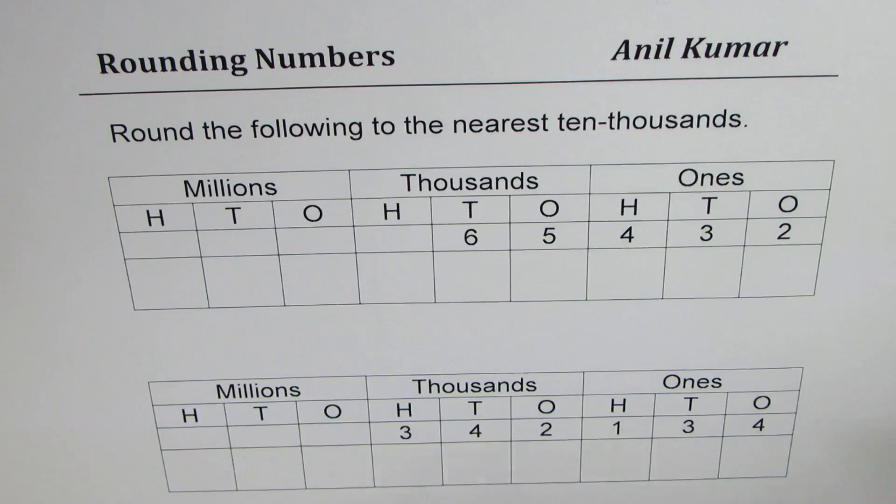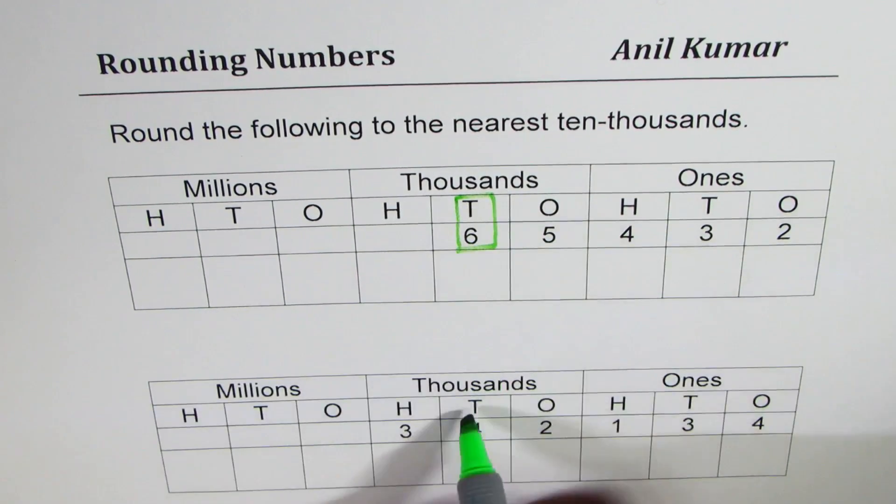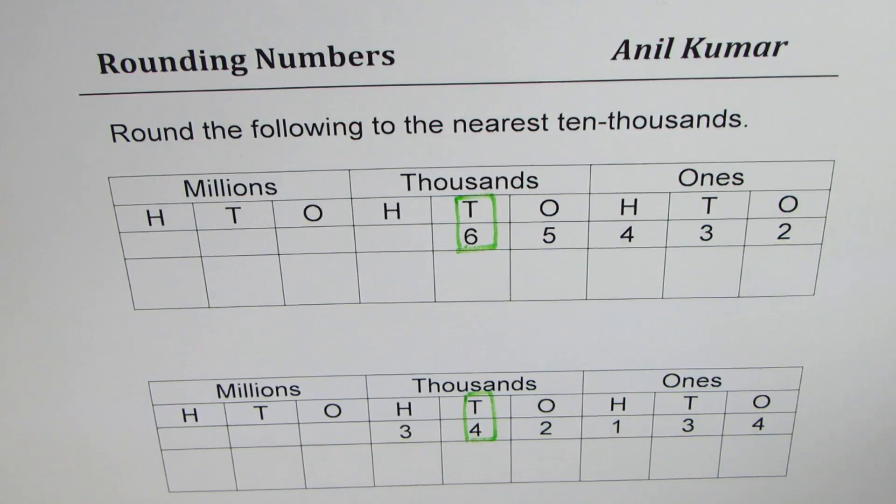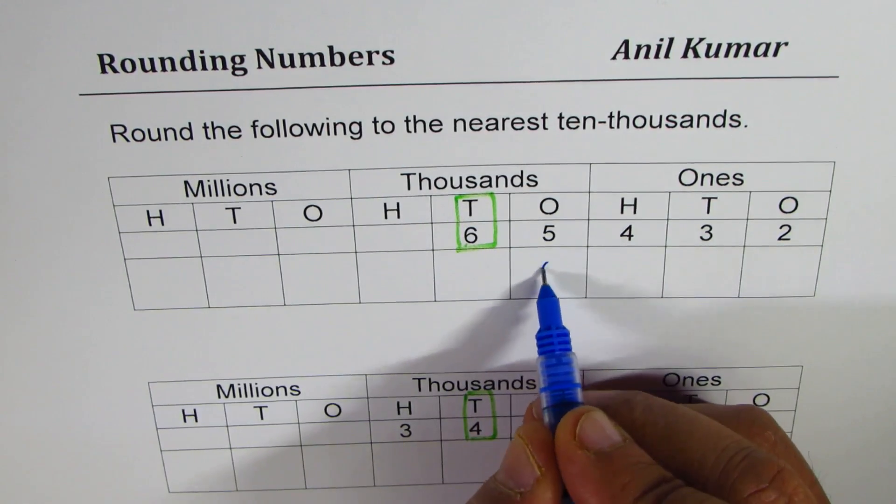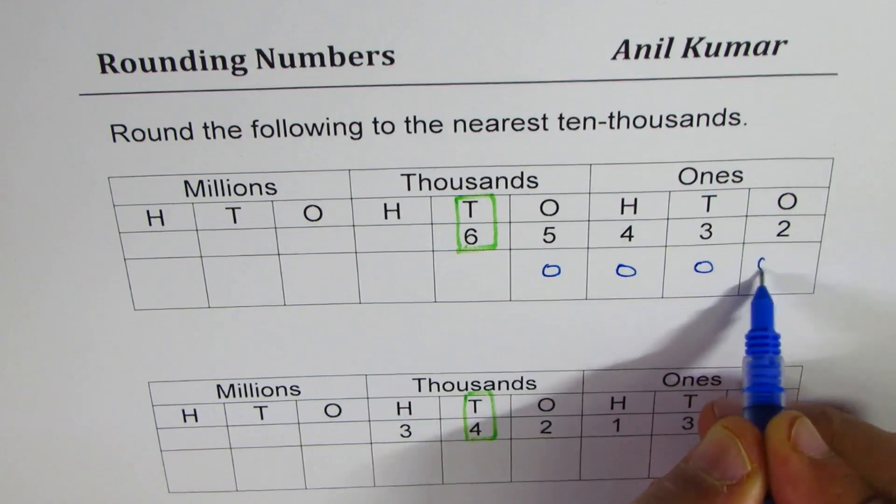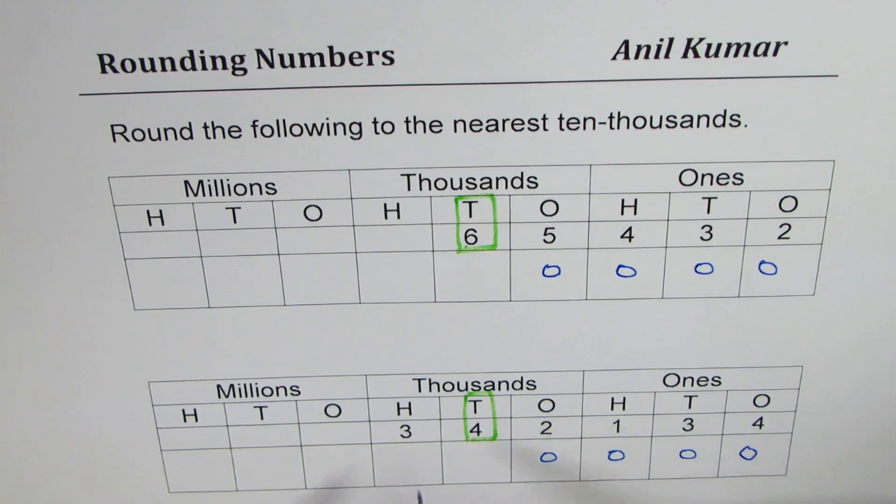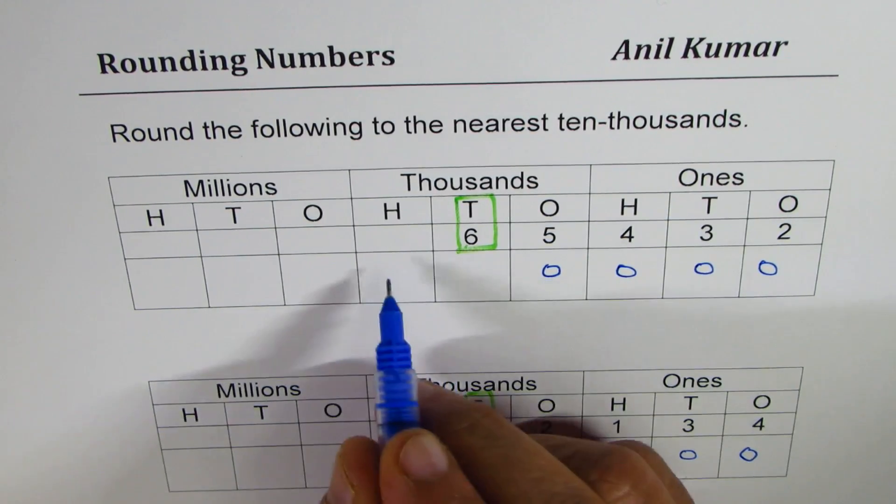So what we will do is we will figure out the number at ten thousand place. In these two cases the numbers are six and four. Numbers to the right will be made zero. So numbers to the right will be made zero. Numbers to the left will be taken as same.